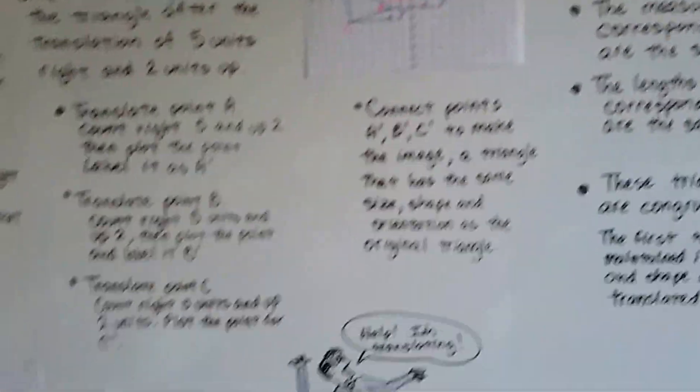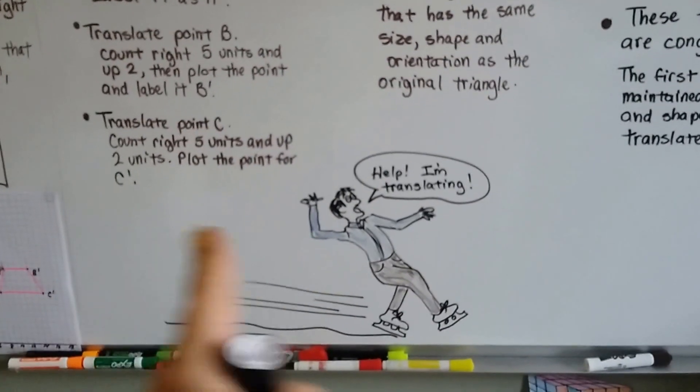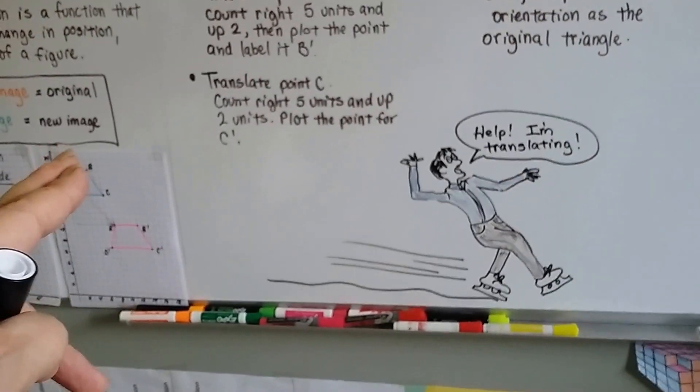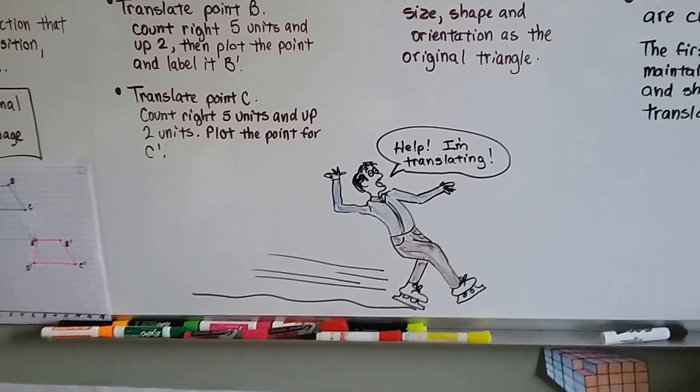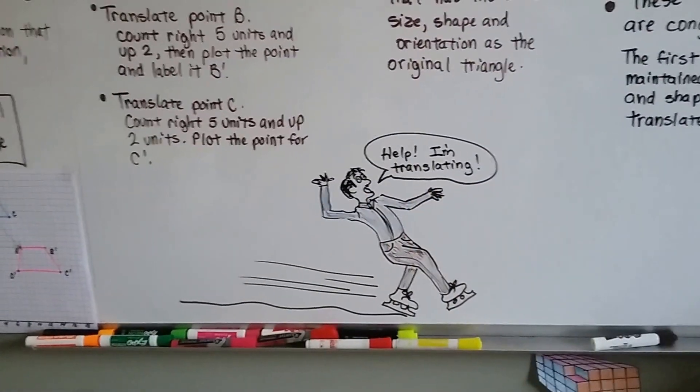Remember, translating is like sliding on ice. The shape just slides to a new position, a new spot on the grid, on the coordinate plane. So, he's translating.